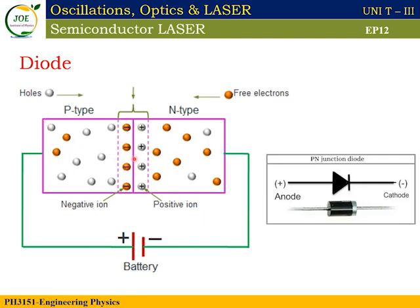In P-type semiconductor, the majority carriers are positive holes. The hole connects with electrons, and we concentrate the charge carriers at the junction. This area is called the depletion layer. The charge carriers penetrate the junction, causing charge transition. The charge transition will be activated and the diode will act as a switching device.